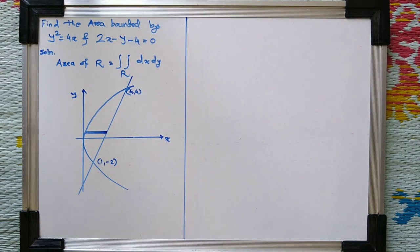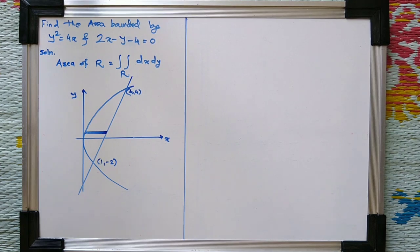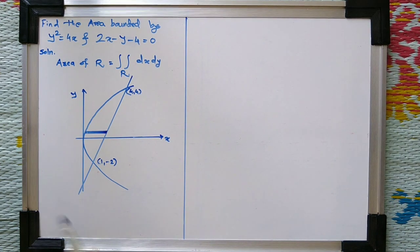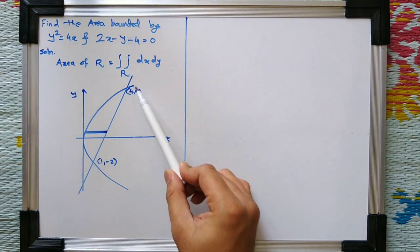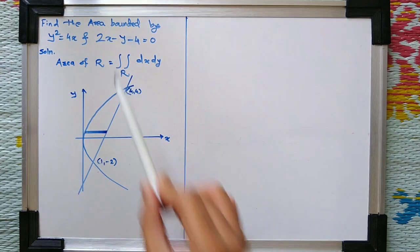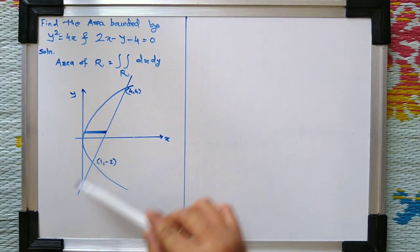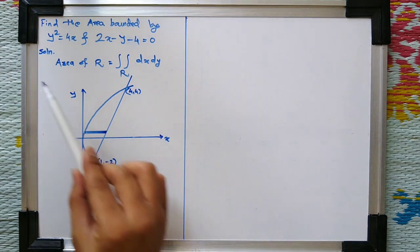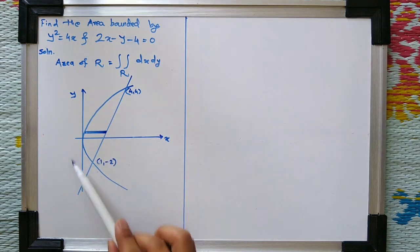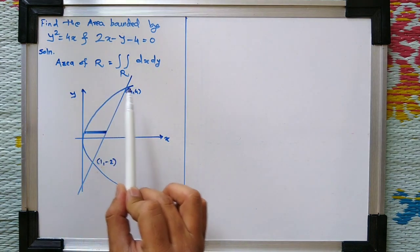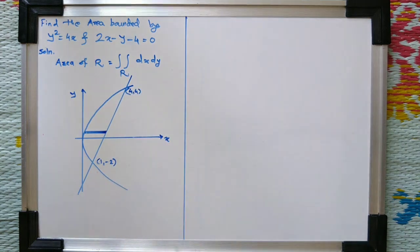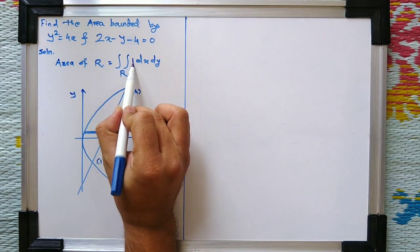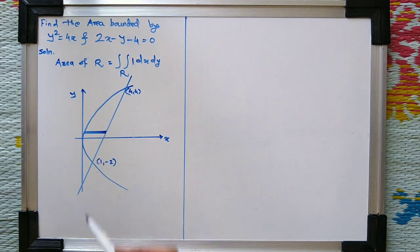Hello students. In this video we will see one application of double integral, that is finding area of a region using double integral. We will see how to find the area bounded by two curves. The area of region R is equal to the double integral over R of dx dy — we are simply integrating 1 over region R, and this gives us the area of the region.